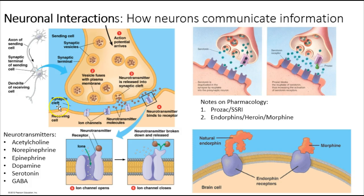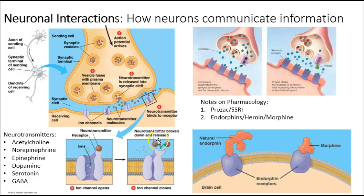There are vesicles in the synaptic terminal filled with neurotransmitters. These neurotransmitters are released — exocytosed — into the synaptic cleft. Neurons don't actually touch; they come very close but don't make contact. The message becomes chemical: neurotransmitters are dumped into the synaptic cleft and interact with receptors on the next neuron's surface, acting as a ligand that binds the channel, changing its shape and allowing ions to pass. After the message is passed, the neurotransmitter is broken down and the synaptic cleft is cleared.